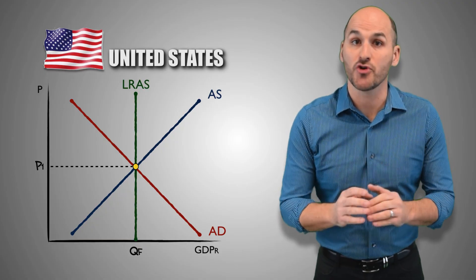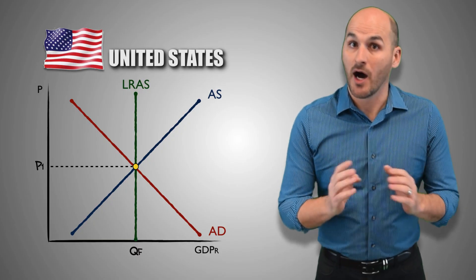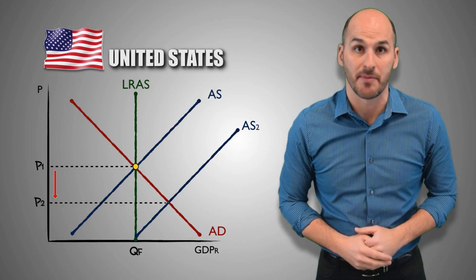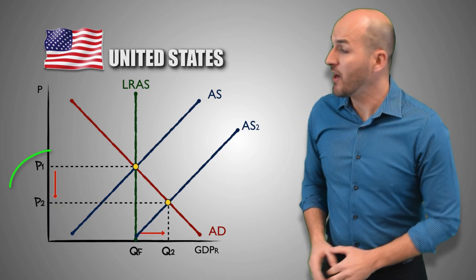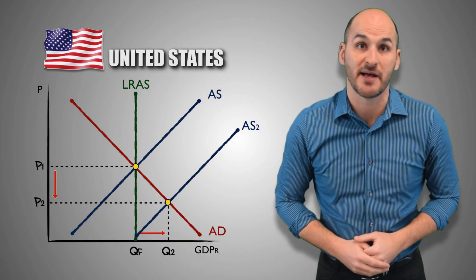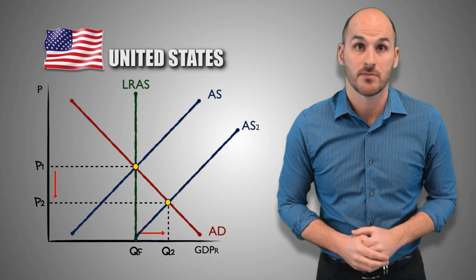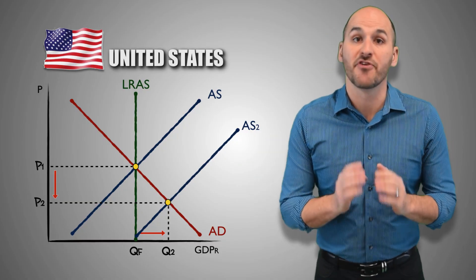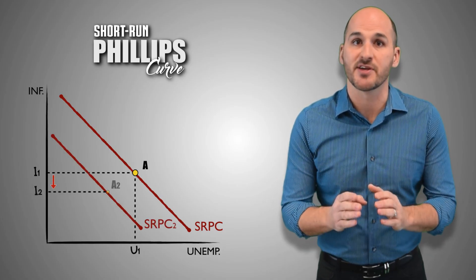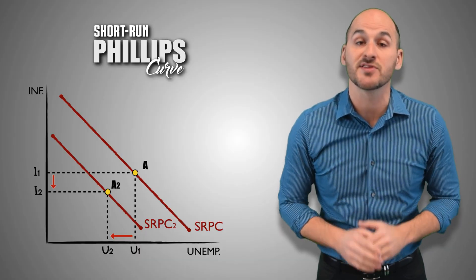Now suppose that Congress increases per unit subsidies to all firms in the domestic economy. American firms will receive grant money from the government that they will use to buy more capital and equipment, hire more workers, or pay for production costs. This increase in government subsidies will cause an increase in short run aggregate supply across the entire economy. As short run aggregate supply increases, price levels will decrease, causing deflation, and real GDP output will increase as consumers boost aggregate quantity demanded as products become less expensive. Firms will hire more workers, causing the unemployment rate to decrease. By shifting the short run Phillips curve to the left, we can conclude that the economy has experienced a decrease in the inflation rate as well as a decrease in the unemployment rate as a result of an increase in per unit subsidies and the subsequent increase in short run aggregate supply.